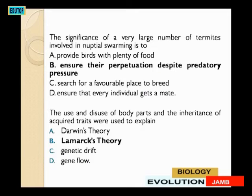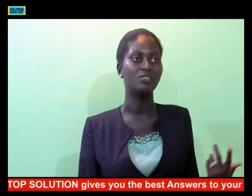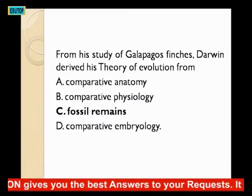The use and disuse of body parts and the inheritance of acquired traits were used to explain whose theory? A: Darwin's theory; B: Lamarck's theory; C: Genetic theory; D: Flow. The answer is Lamarck's theory — Lamarck is the one who gave the theory of use and disuse of body parts.